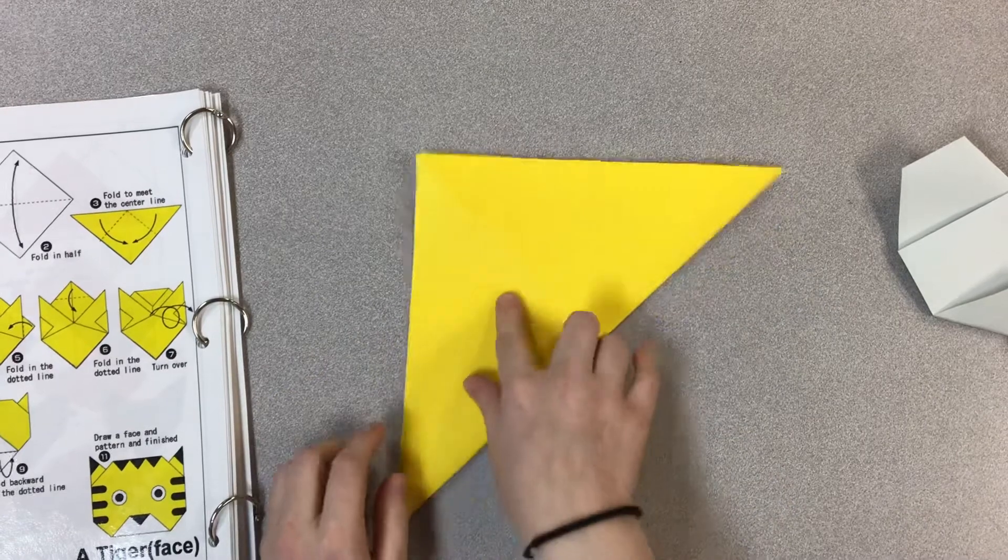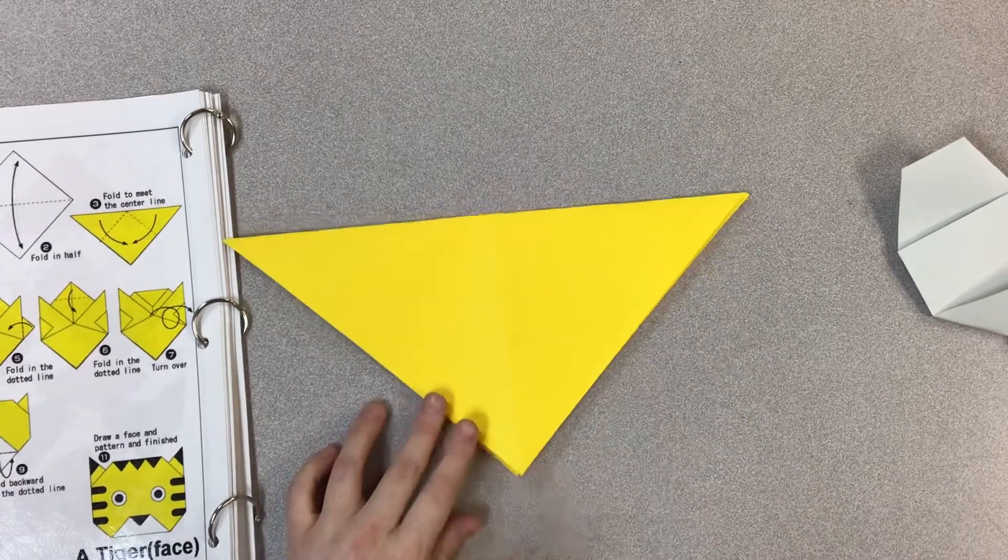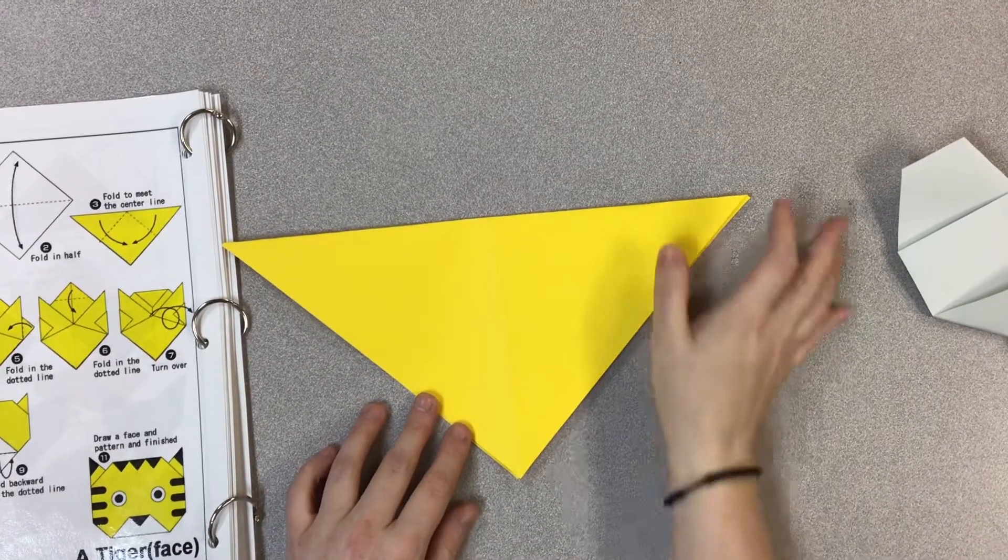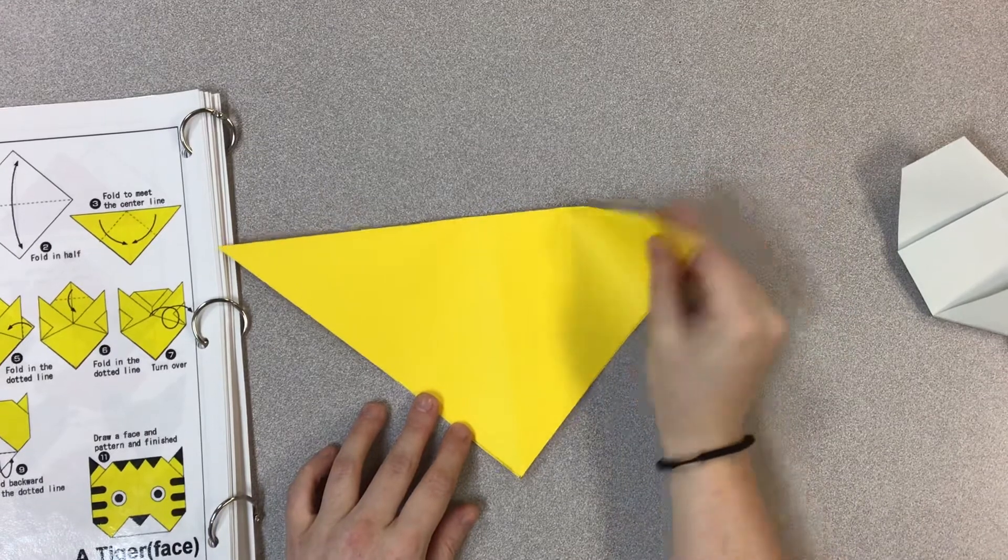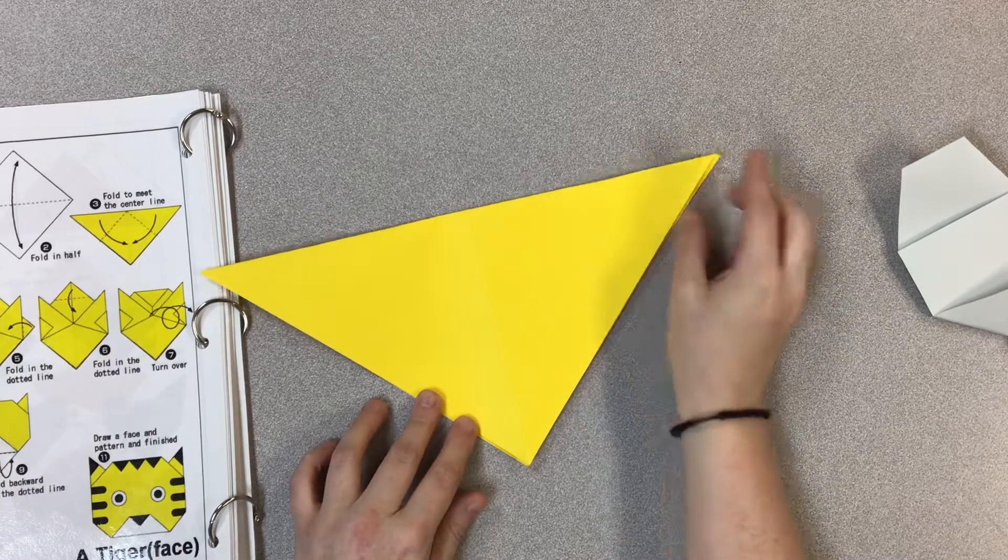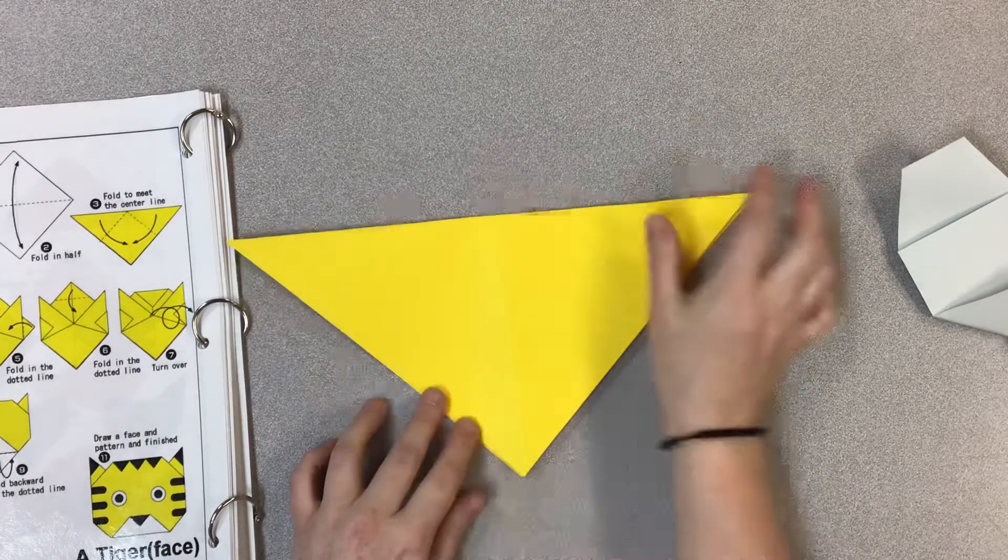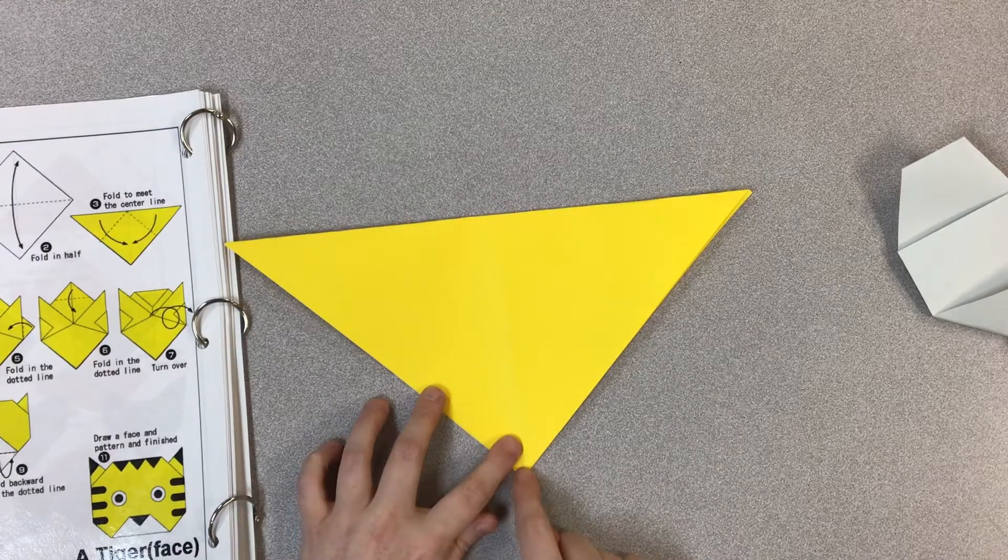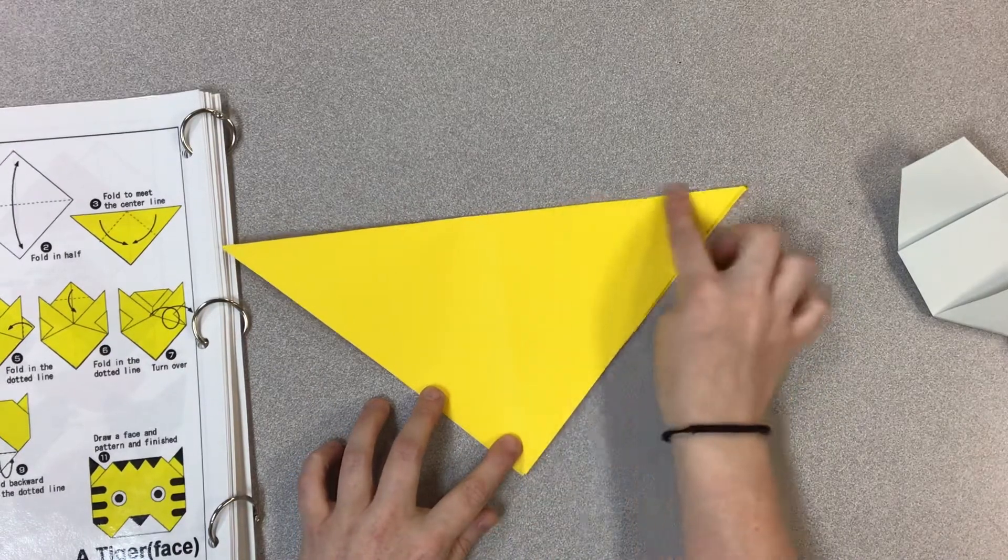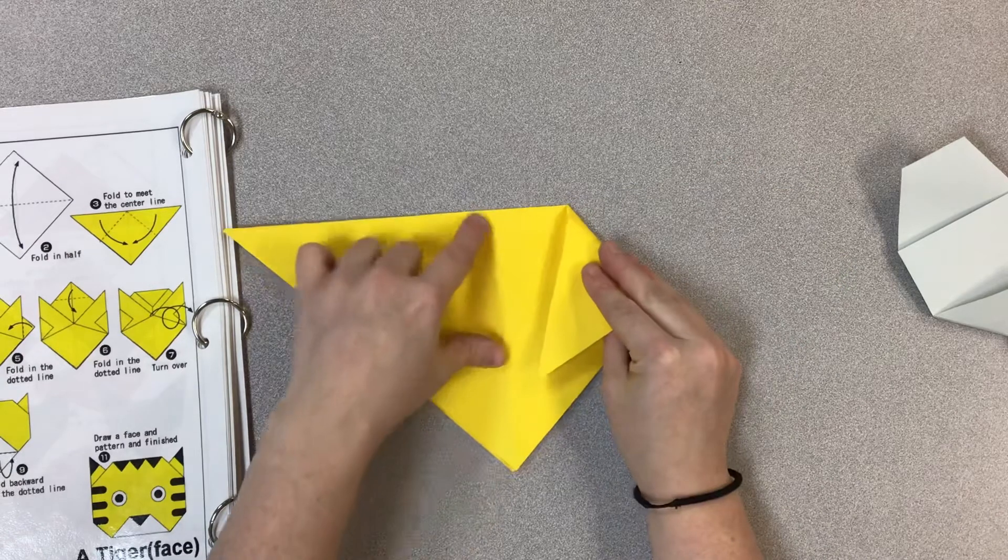Then I'm going to fold it so it looks like an upside down triangle. And I'm going to be taking these little corner pieces, little points, and I'm going to bring them down to the point at the bottom. So this line right here is going to be lined up with this middle line.